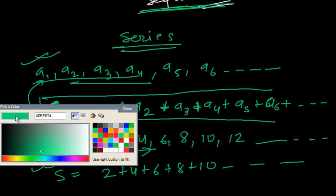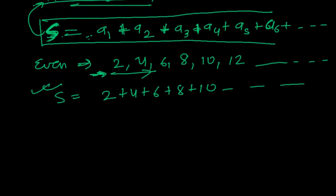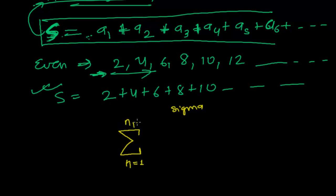Sometimes we represent a sequence symbolically — for example, from n=1 to n=4, where n represents a natural number. If the formula giving the terms is n+1, then substituting natural numbers gives us the terms of the sequence.